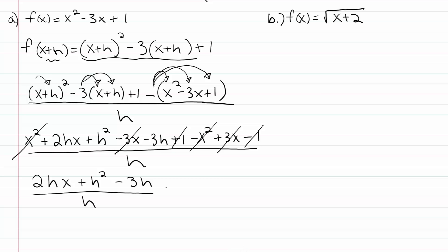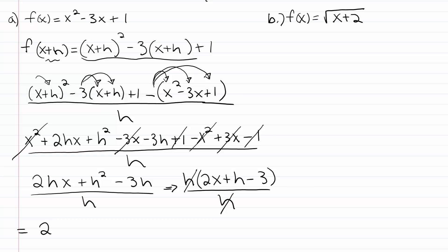From there, we can factor out the h that's common to the terms in the numerator. So we pull out an h, leaving just two x plus h minus three, and all of that is over h. So we can cancel out those h's, and our final answer for the difference quotient is just two x plus h minus three.